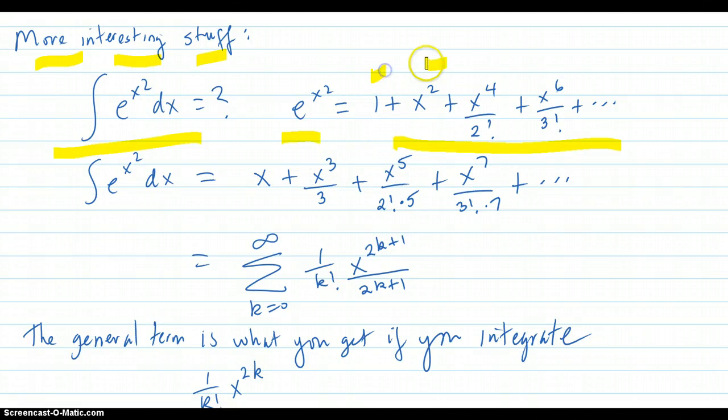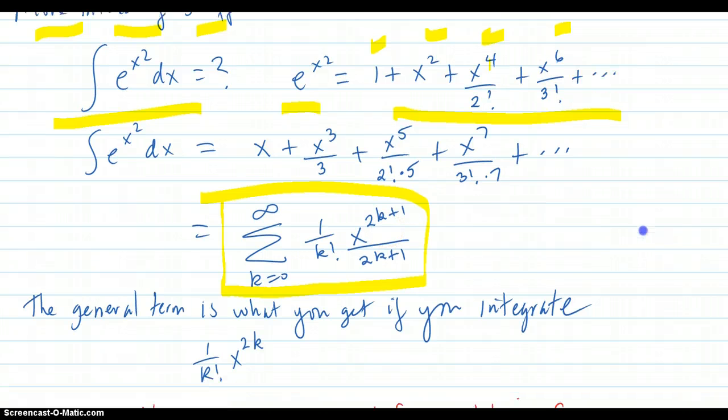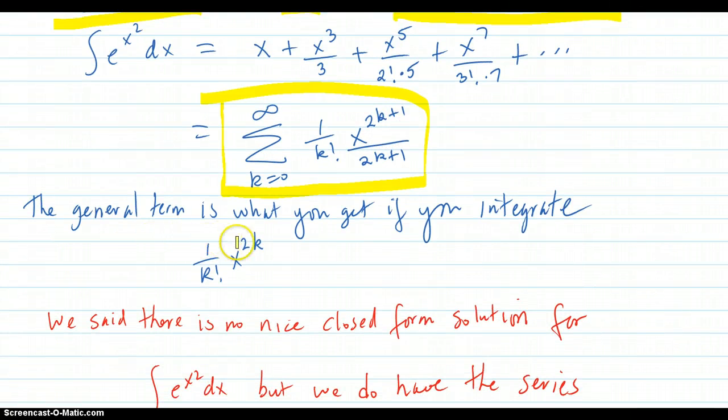So why don't you just integrate up term by term? Because it's just a sum. So integrate up x, x cubed over 3, x to the 5th over 5, and you have the 2 factorial down there. That's just a constant. x to the 7th over 7, times the 3 factorial down there. Just integrate up term by term. And that turns into this series with the pattern there. So the general term is what you get if you integrate 1 over k factorial x to 2k. What I mean is that you would have the 1 over k factorial. You'd add 1 to here and divide by the new exponent. That's what you do. And that's how you get it.